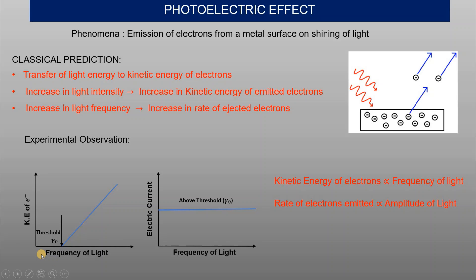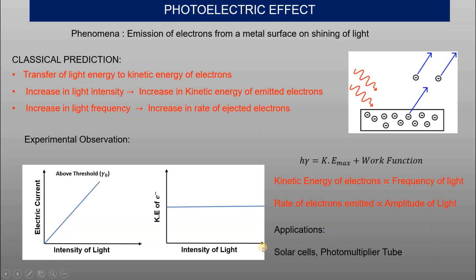Classical physics fails here because it predicts that a dim but continuous wave should eventually accumulate enough energy to eject electrons regardless of frequency. However, experimentally, increasing the intensity of light (below the threshold frequency) does not produce electrons. Instead, increasing intensity increases the number of photons, which increases the number of emitted electrons — not their energy.